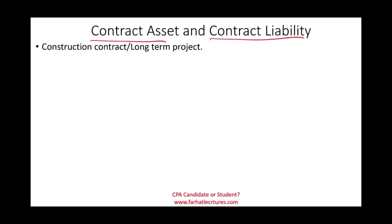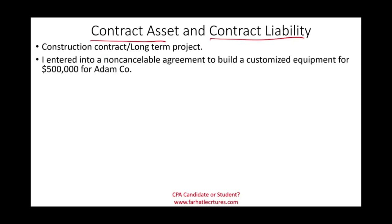Welcome to this session where we will discuss the concept of contract asset and contract liability. The word 'contract' usually refers to a construction contract or long-term project — some sort of project that's going to take several years. That's why the word contract is there, because when you have a long-term project you sign a contract between two parties, and as a result we could have a contract asset or a contract liability. The best way to illustrate this is to walk through an example showing how these accounts are created.